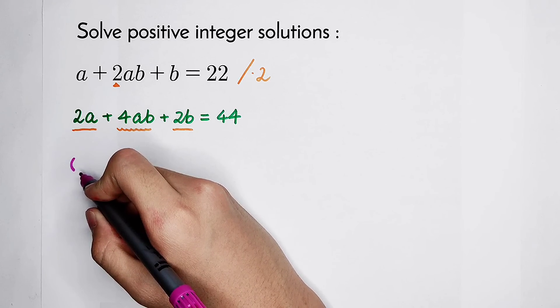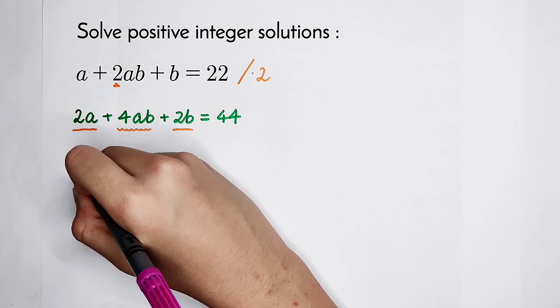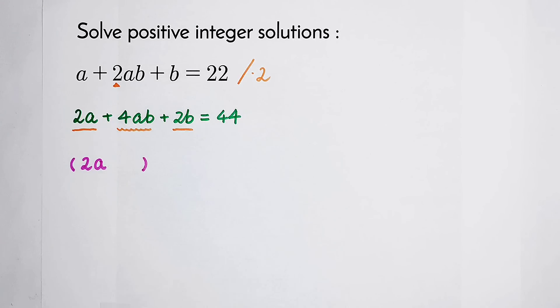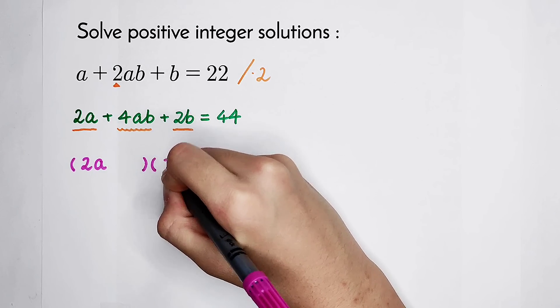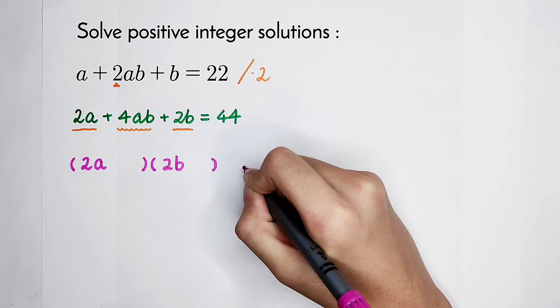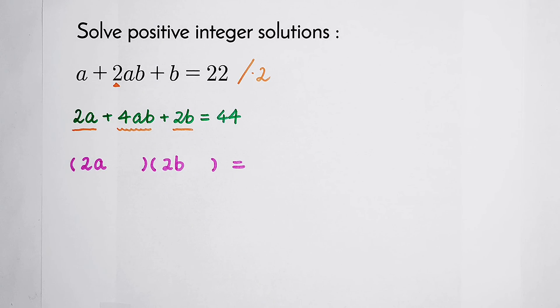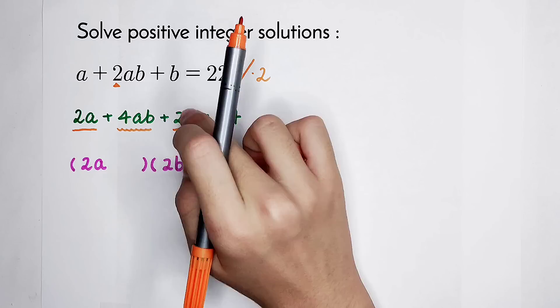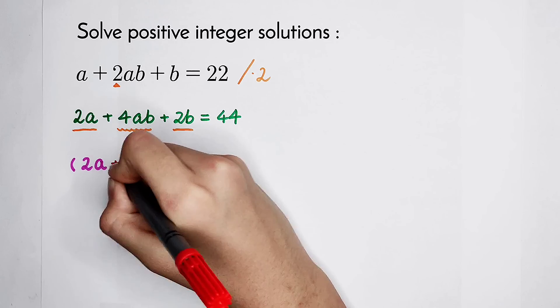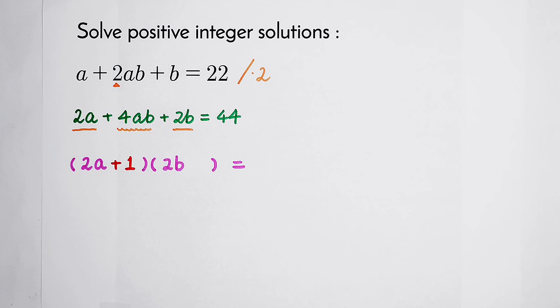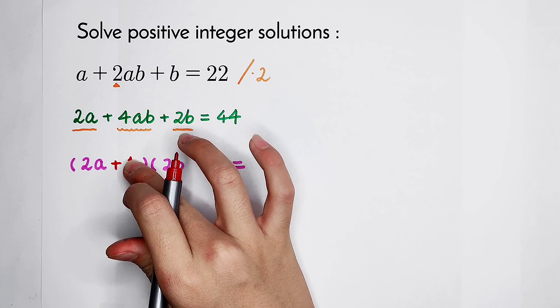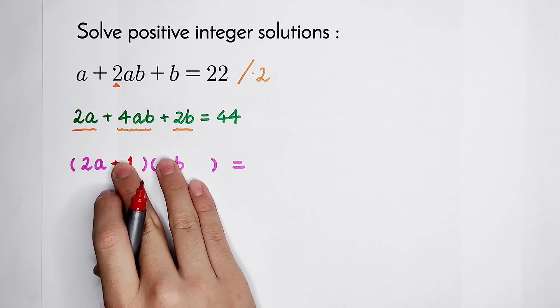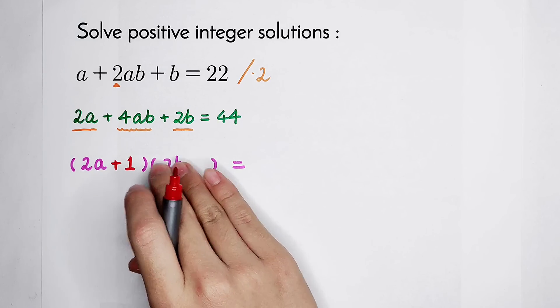How should we factor it? It must be 2a plus something, times 2b plus something, equal to I don't know, maybe plus something or minus something. Because we lack a number. Now you should pay attention. The coefficient of 2b is plus 1. So I'm going to add 1 in the bracket, in the term of 2a. Because 2b times positive 1 is 2b.